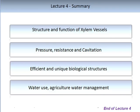To summarise and conclude this lecture: you should have learnt about the detailed structure and amazing function of the xylem vessels, and now understand how water moves from the root system up to the leaf system. You should understand the inputs of pressure and resistance and how they can lead to the negative attribute of cavitation. You should appreciate how efficient this process is, especially compared to man-made attempts at similar feats, and recognise that xylem vessels are unique biological structures. Finally, the reason we spend so much time learning this in detail is that it is critical for water use in agriculture and water management.